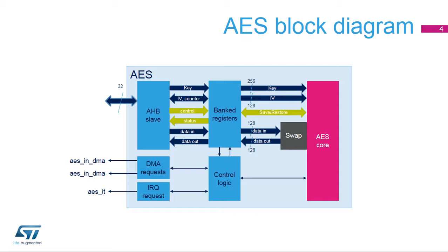Software can suspend a message if the AES needs to process another message with a higher priority, then resume the original message. The AES core is the unit in charge of processing data. Its logic supports 1, 8, 16, or 32-bit data swapping. Internal data paths are 128 bits wide for data and initialization values and 256 bits for keys. 128-bit keys are also supported.